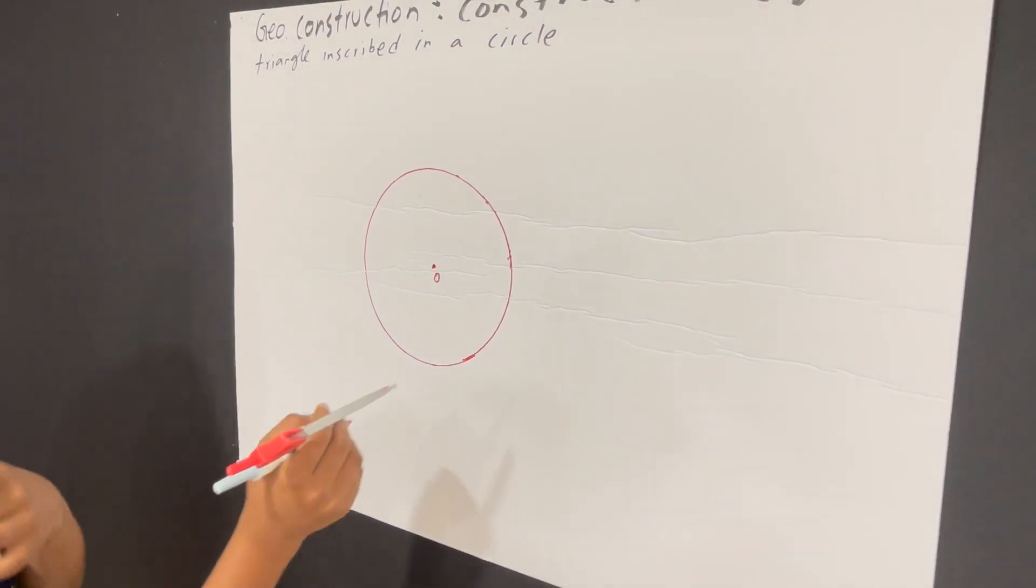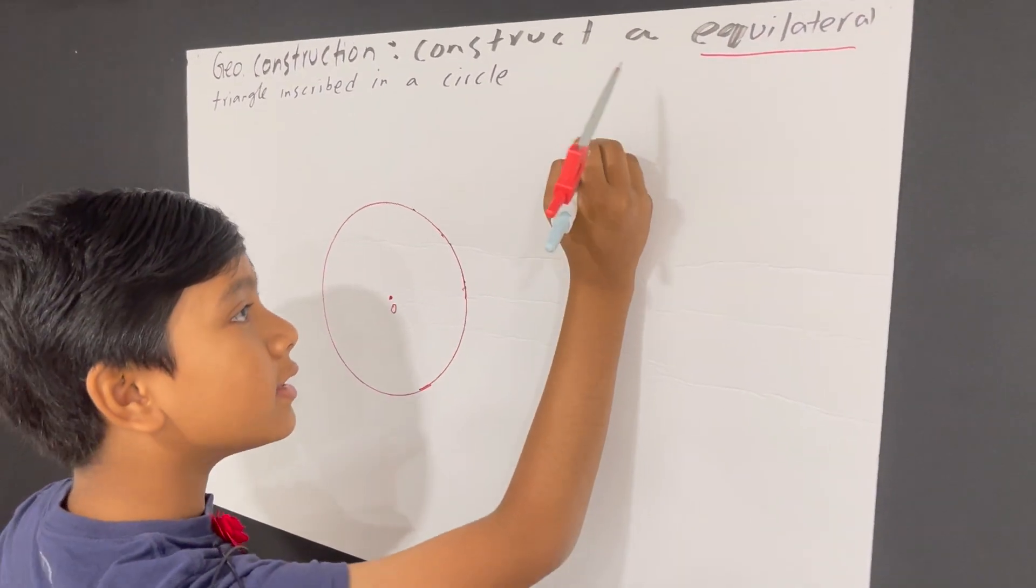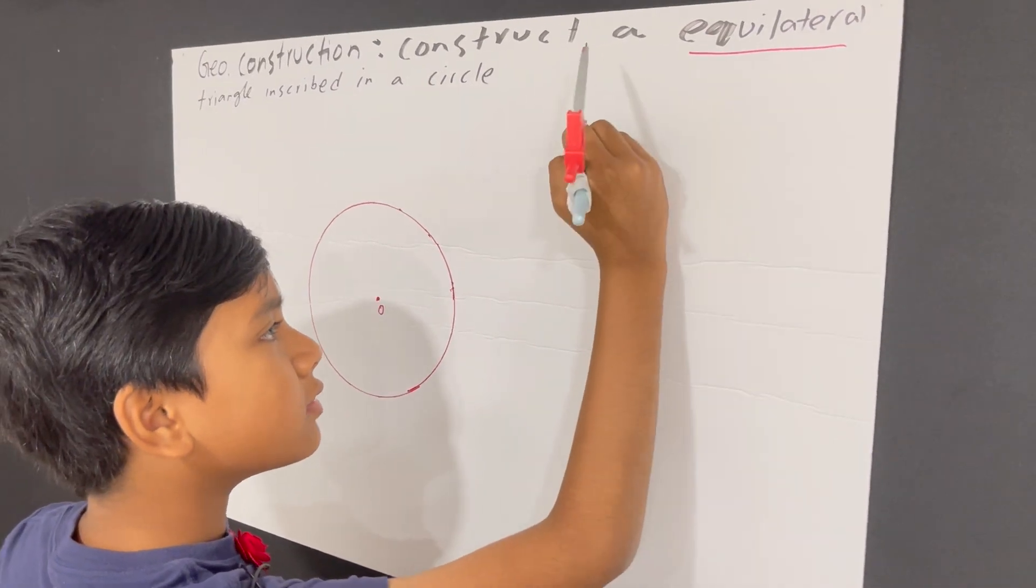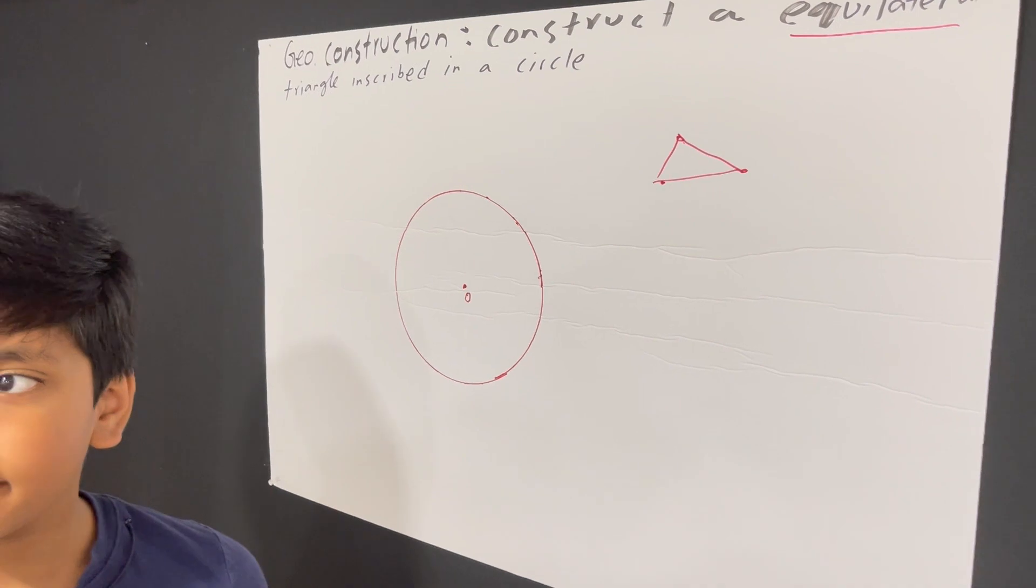Okay, first of all, look at this. If you just connect three random points, you're going to get something that's not an equilateral triangle. Wait, so don't connect them.